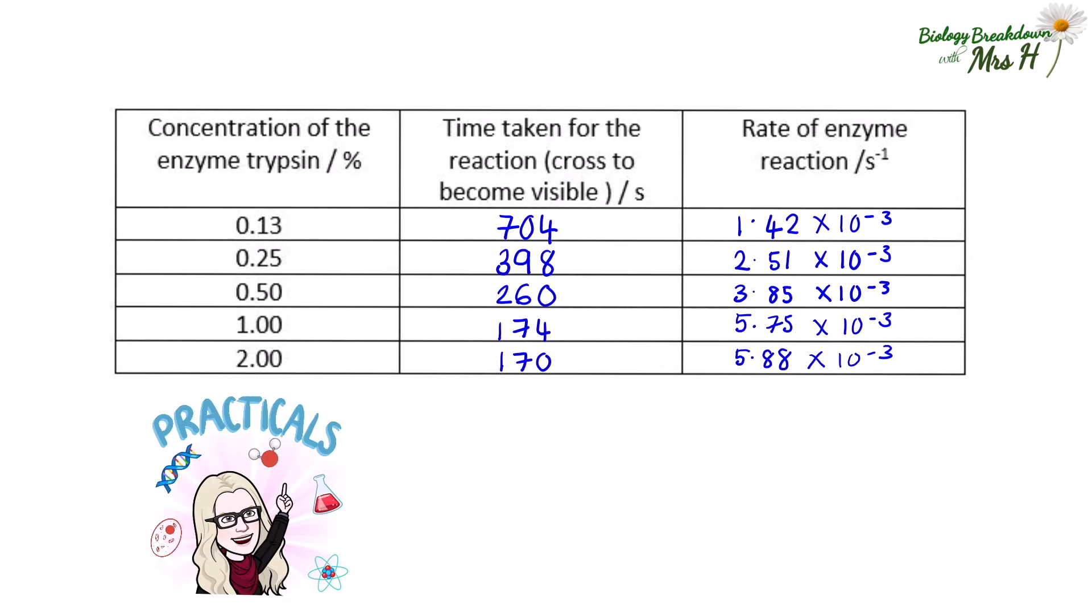That is when the cross becomes visible and then you are going to plot a graph with concentration of trypsin and then the rate per second of that reaction.